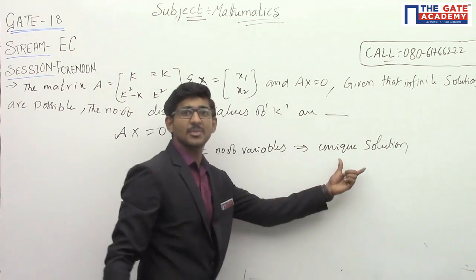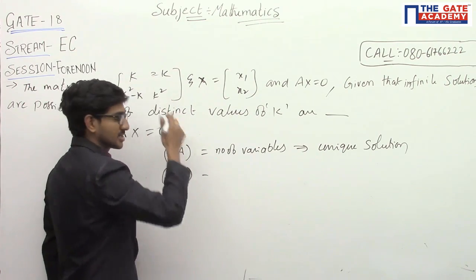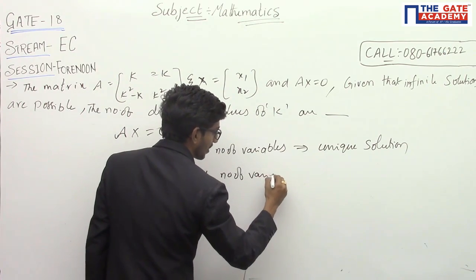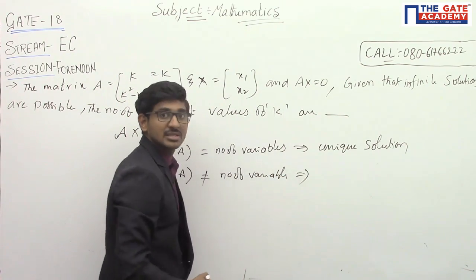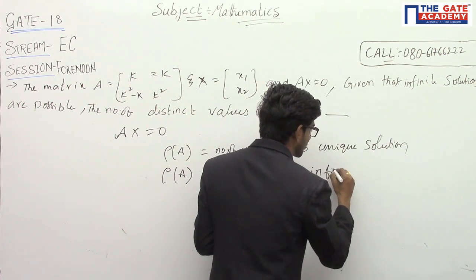That is nothing but trivial solution. If rank of A or rank of coefficient matrix is not equal to number of variables, then the system of equations contains infinite number of solutions.